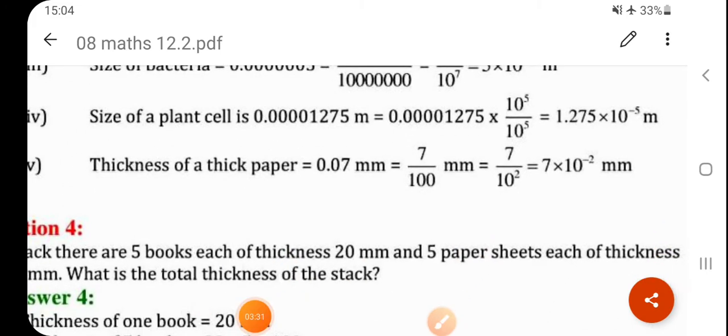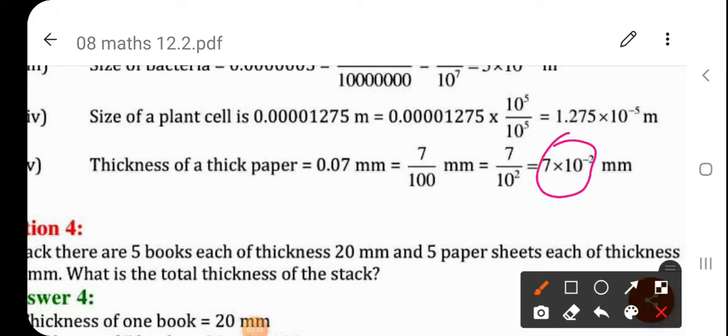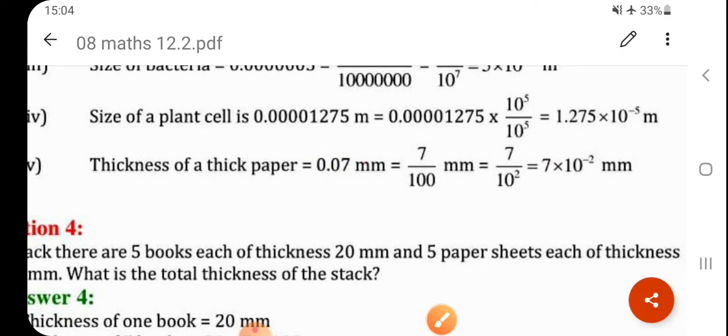Next, thickness of a thick paper. So, here you can write 7. 0.07 is given that you can write 7. It means 7.0. So, 2 decimal places you are going to shift. So, 7 into 10 raised to minus 2 mm.